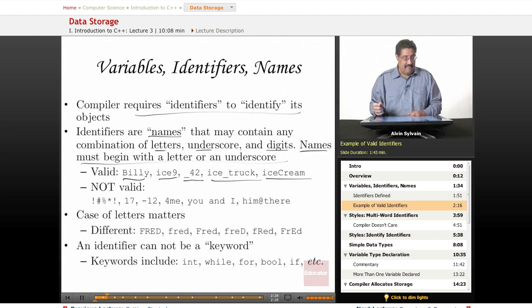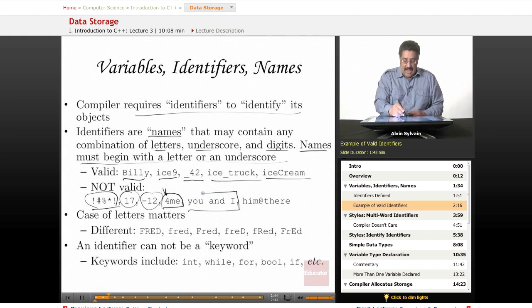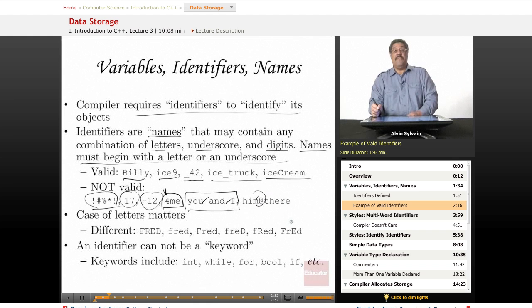These are not valid identifiers. This is more like a cartoon cursing here. 17, that's a numeric literal, as is minus 12. For me, it may be for you or for me, but you can't start it with a digit. You and I have got spaces in there, you can't have spaces inside your identifiers. And here's a special character, the at sign, which makes for a very nice email address, but not a good variable.